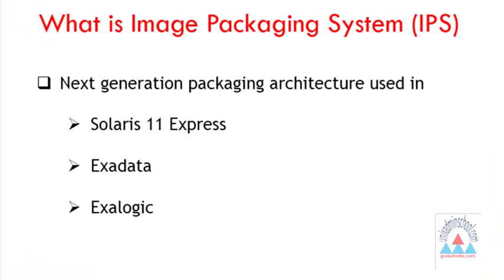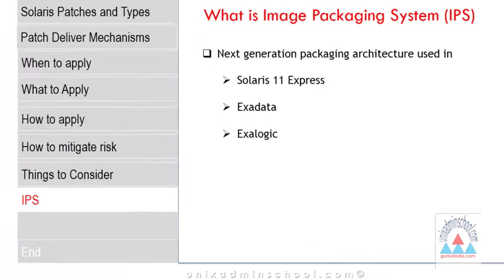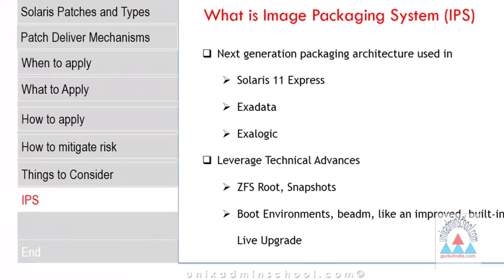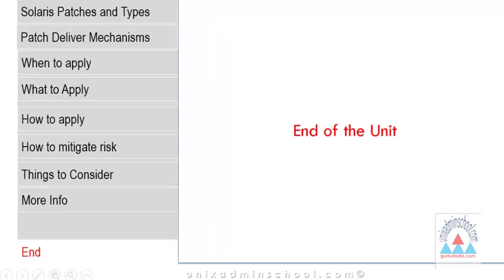A homogeneous environment always helps to reduce complexity and hence the total cost of ownership. To make the patching task easier, Oracle introduced a new next-generation packaging architecture in Solaris 11 called the Image Packaging System, also known as IPS. It leverages technical advances like ZFS root snapshots and boot environment features. A detailed demonstration of how to install and manage Solaris patches will be shown in the Solaris management module of the course.